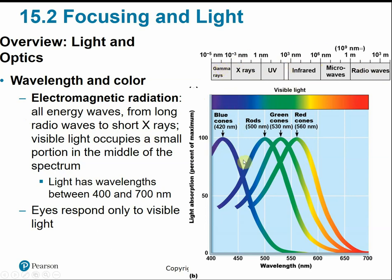Different colors are characterized by their different wavelengths. Generally, the visible light spectrum waves travel between 400 and 700 nanometers. Our eyes are only able to respond to this visible light spectrum, but there are some other organisms that can detect UV or infrared. Bees, for example, are able to see infrared, so flowers show different colors to them than what we would see.